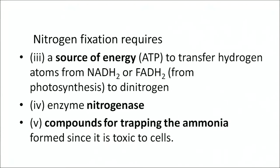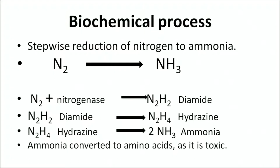The next requirement is the enzyme nitrogenase. Finally, there must be certain compounds for trapping the ammonia formed, since ammonia is toxic to cells and cannot be allowed to accumulate. This is an overview of the biochemical process involved in the stepwise reduction of nitrogen to ammonia, which happens in three sub-steps. Nitrogen is first converted, in the presence of nitrogenase enzyme, into a compound called diamide.